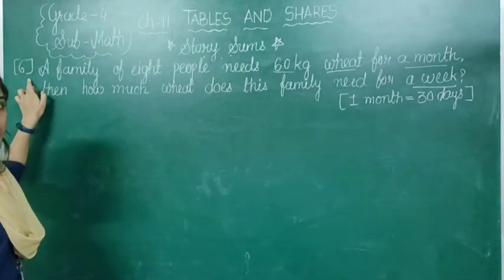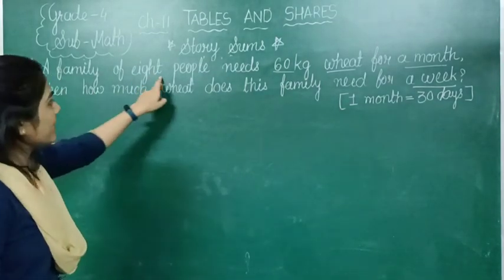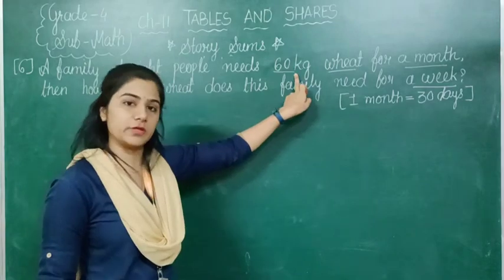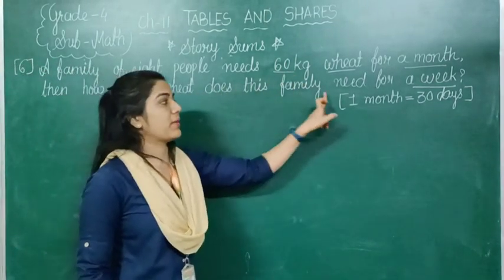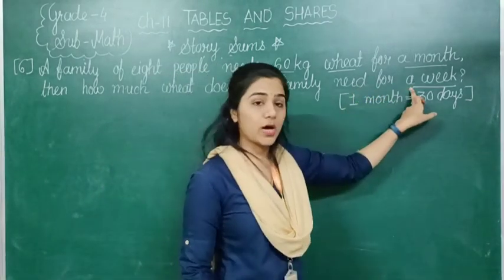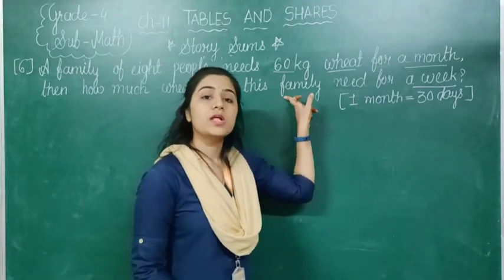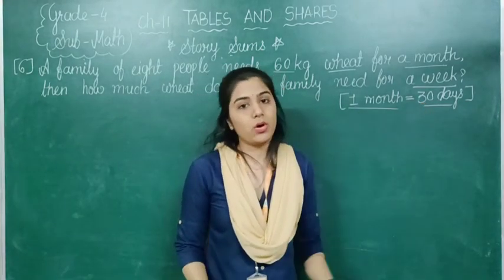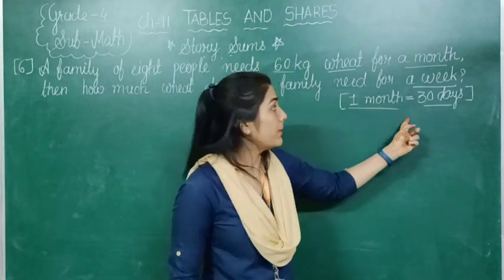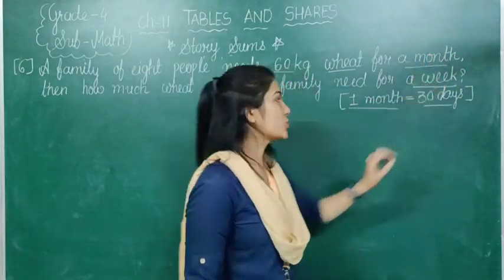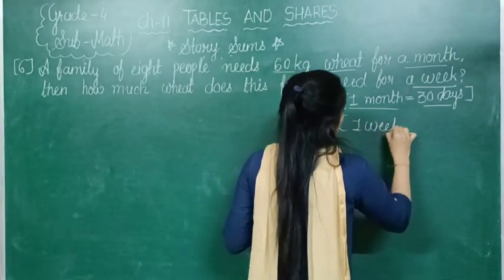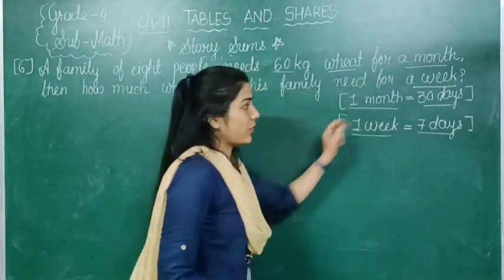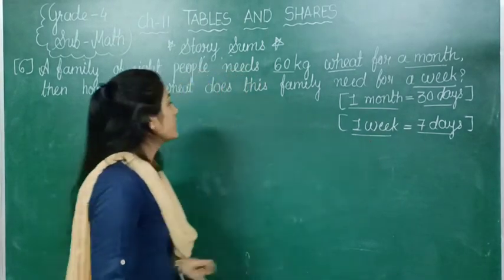Now we move to question number 6. A family of 8 people needs 60 kg of wheat for a month — meaning in 1 month they need 60 kg wheat. How much wheat does this family need for a week? In your question the hint is given that 1 month equals 30 days. We also need the hint for a week — 1 week has 7 days. So we need this hint.